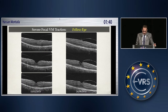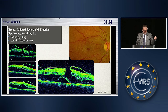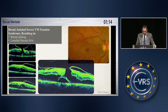This is the fellow eye of this patient. The other eye has an epimacular membrane, a lamellar hole, and vitromacular traction. If you would like to classify this case, it is broad, isolated, severe vitromacular traction, and it resulted in retinal splitting and lamellar macular hole.